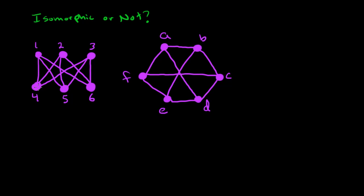Here we have six vertices, and in the other graph we also have six vertices, so that's fine. We also know that edges need to be preserved — adjacency needs to be preserved. So the number of edges has to also be the same. Counting up the number of edges, we get one, two, three, four, five, six, seven, eight, nine edges.